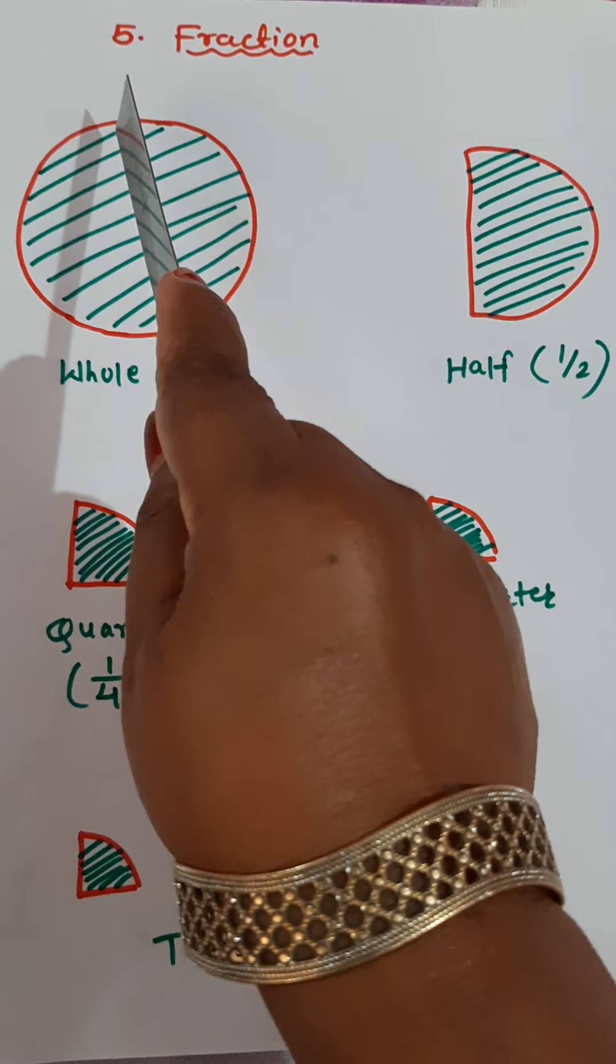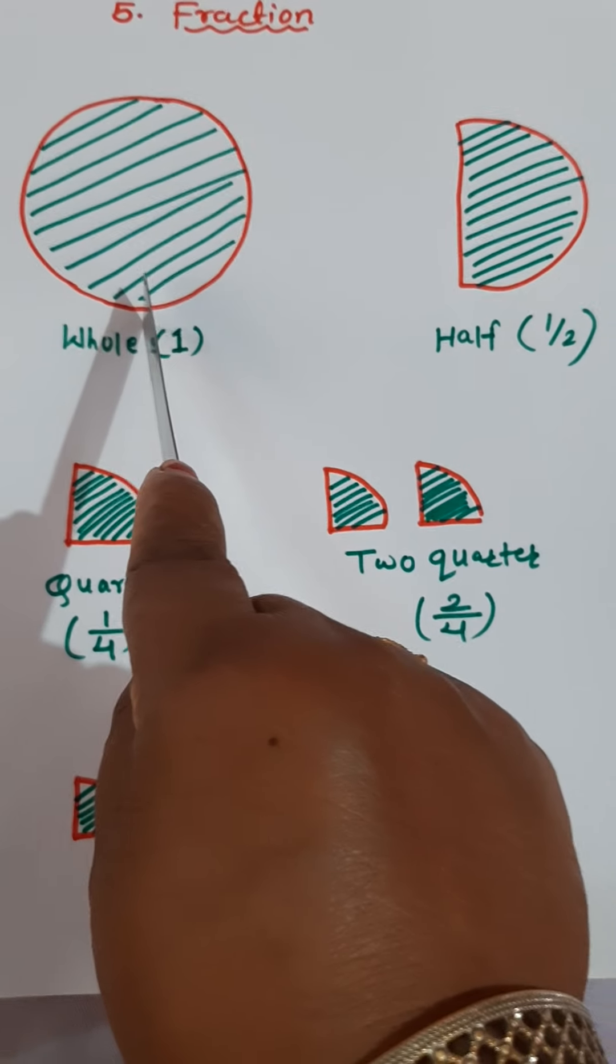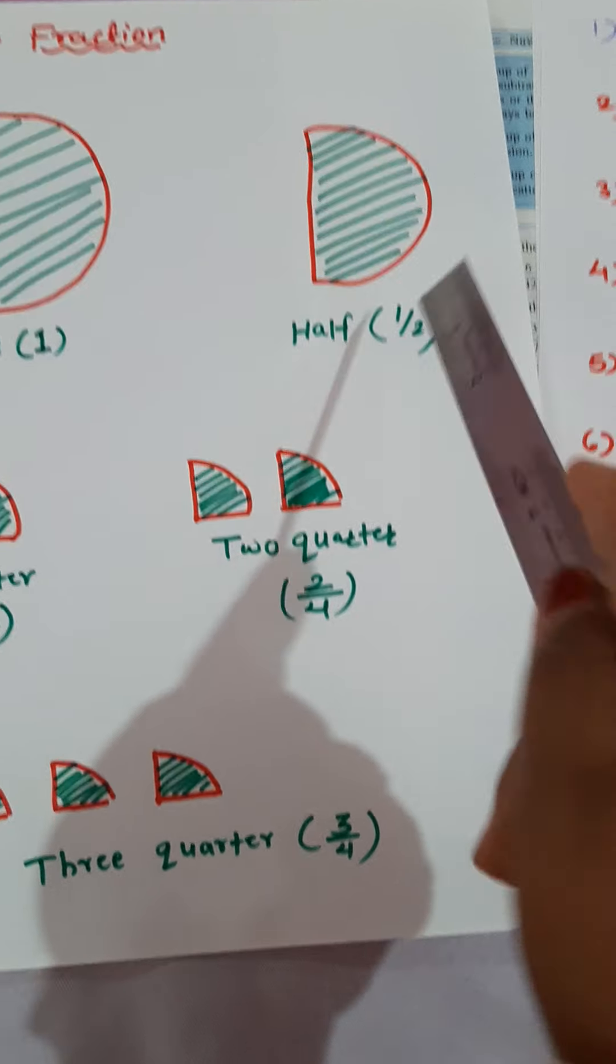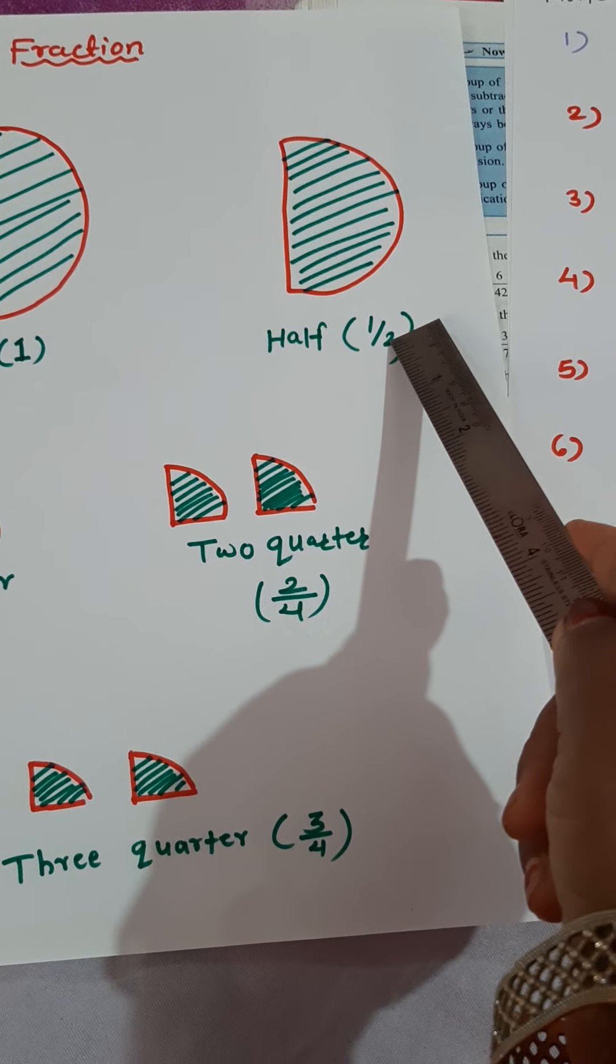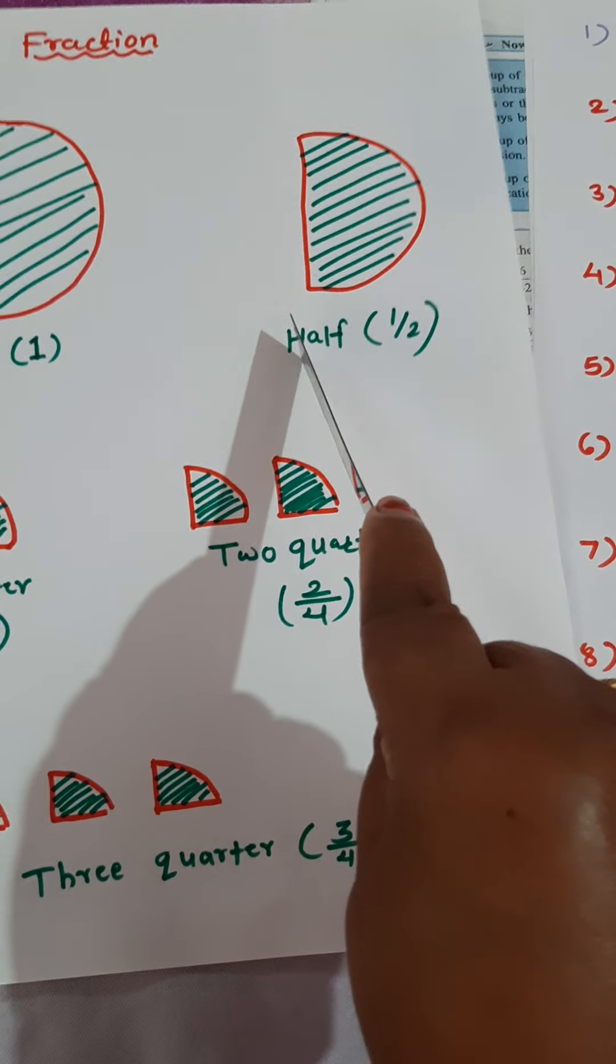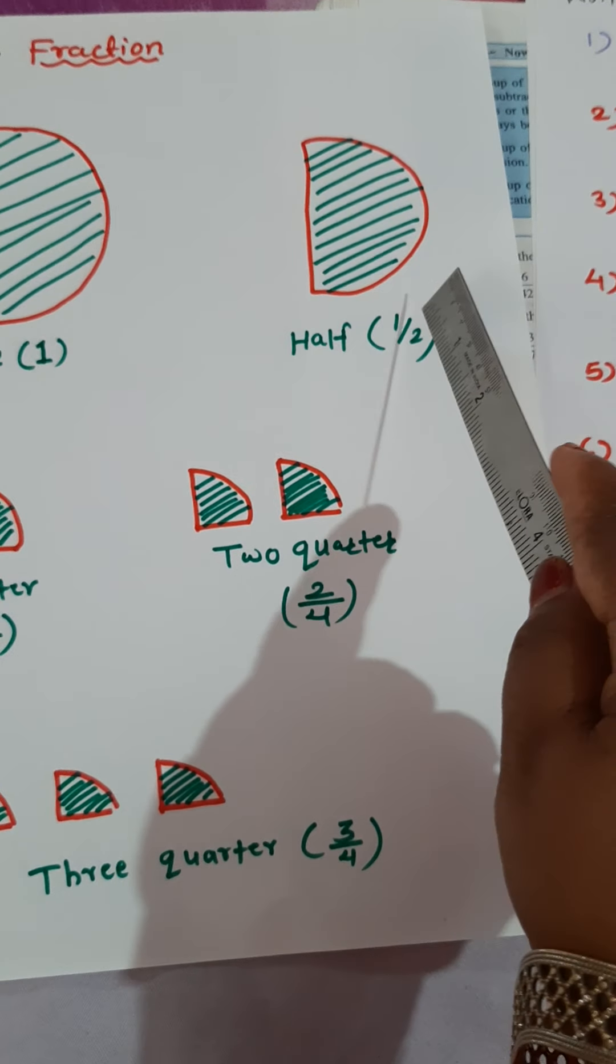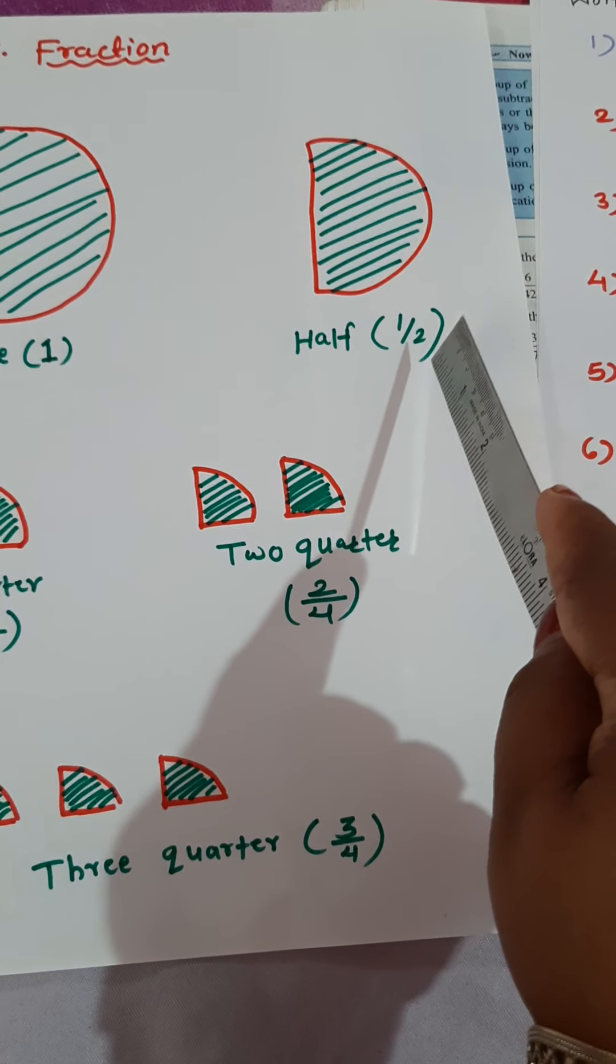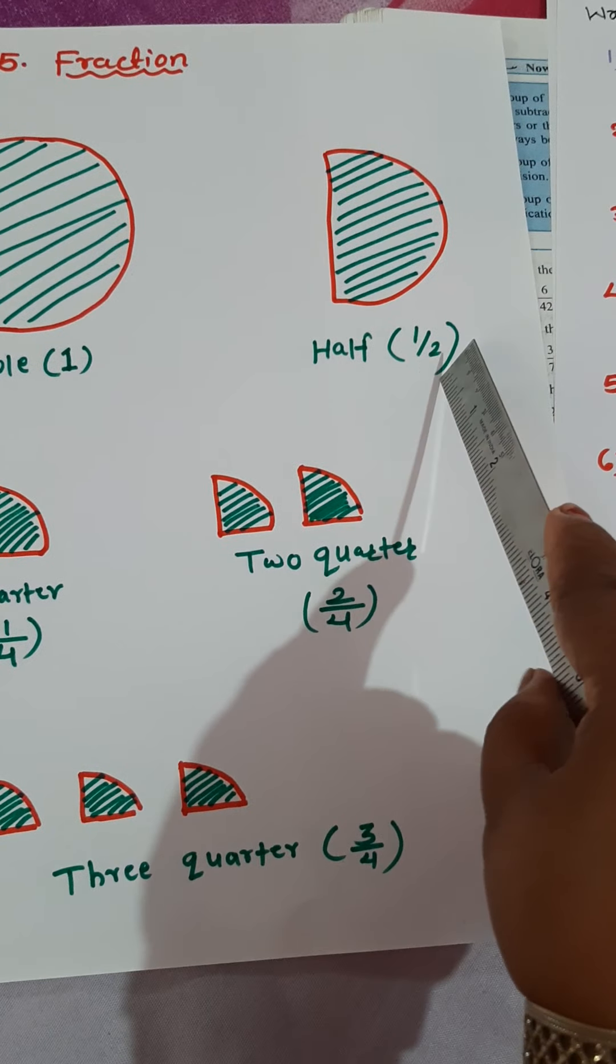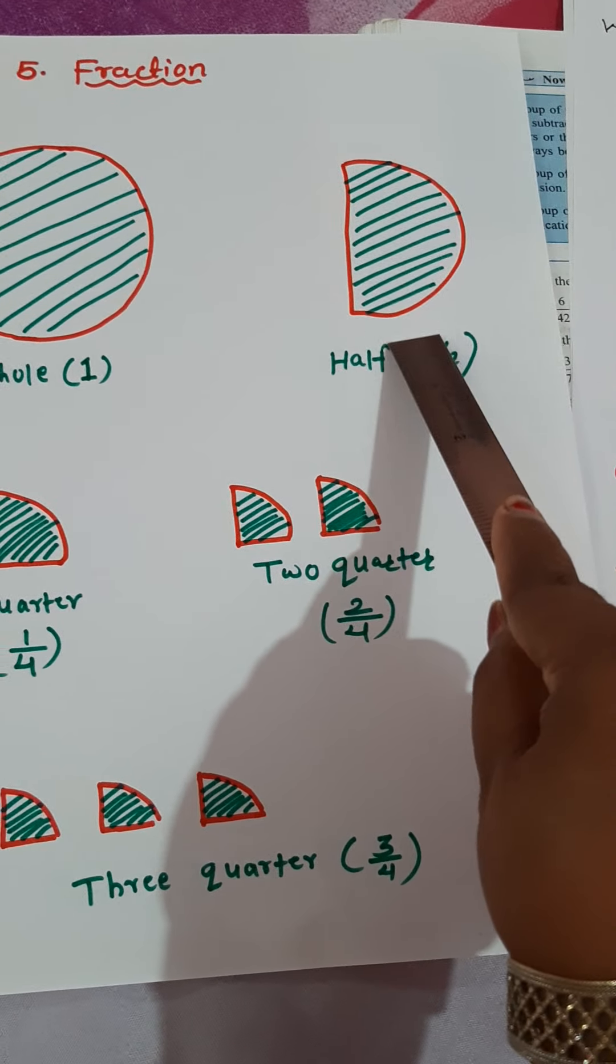If I cut this into 2 equal parts, I will get half. Out of 2 equal parts, 1 part. Total parts, 2. And out of 2 equal parts, I have taken 1. So it is called half and in numbers it is written as 1 upon 2. 1 is numerator and 2 is denominator. Out of 2 equal parts, 1.